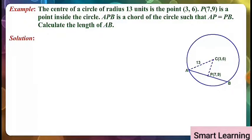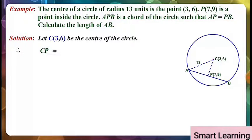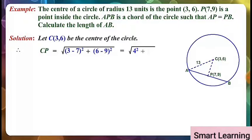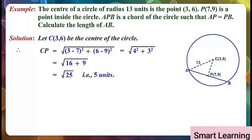Let's solve this. Let C(3,6) be the center of the circle. Therefore CP is equal to under root of (3 minus 7) whole square plus (6 minus 9) whole square, equal to under root of 4 squared plus 3 squared, equal to under root of 16 plus 9, equal to under root 25, that is 5 units.